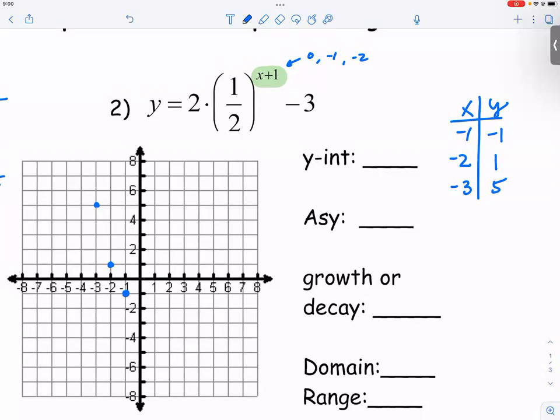Now we also need to find our Y intercept. So we have to put X equal to zero. So zero plus one, it's one. So one half to the first power, it's just one half. One half times two is one. One minus three is negative two.